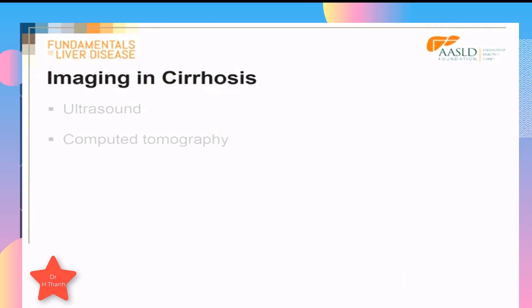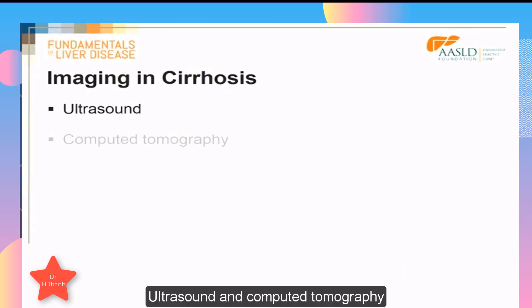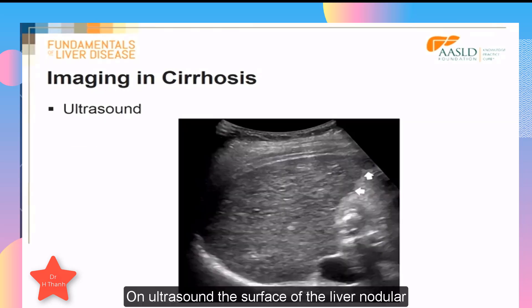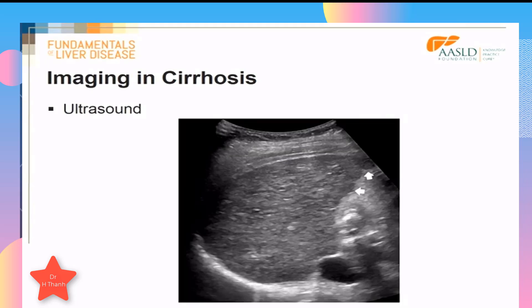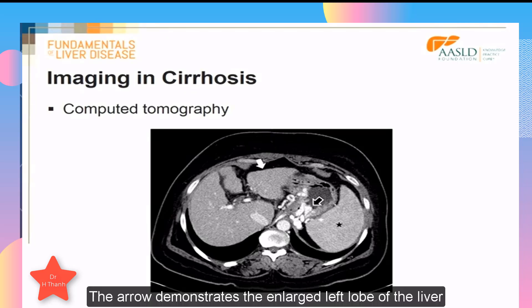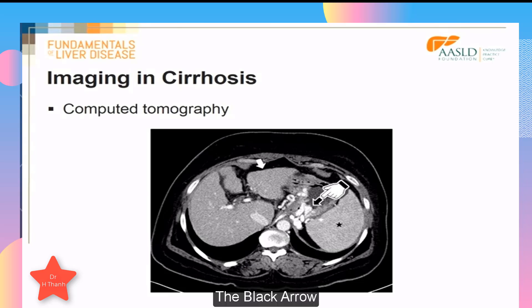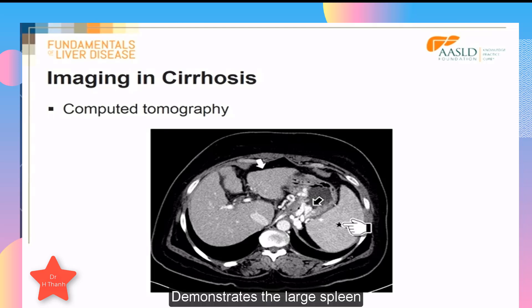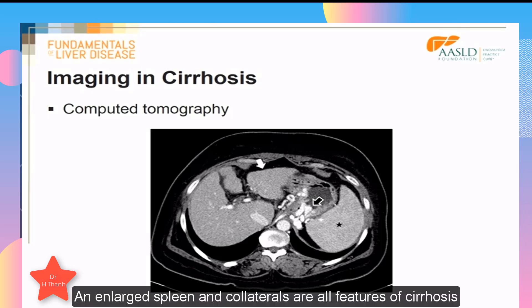Imaging on both ultrasound and computed tomography can alert you to the possibility of cirrhosis. On ultrasound, the surface of the liver may appear nodular, demonstrated by the white arrows. On computed tomography, the surface of the liver is irregular; the arrow demonstrates the enlarged left lobe of the liver, the black arrow the collateral circulation, and the star demonstrates the large spleen. A nodular liver, an enlarged left lobe, an enlarged spleen, and collaterals are all features of cirrhosis.